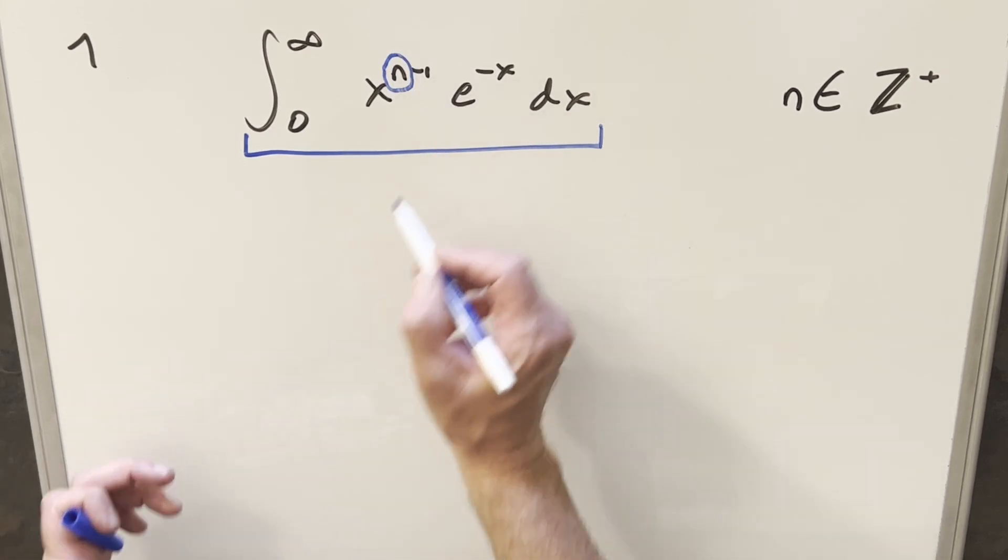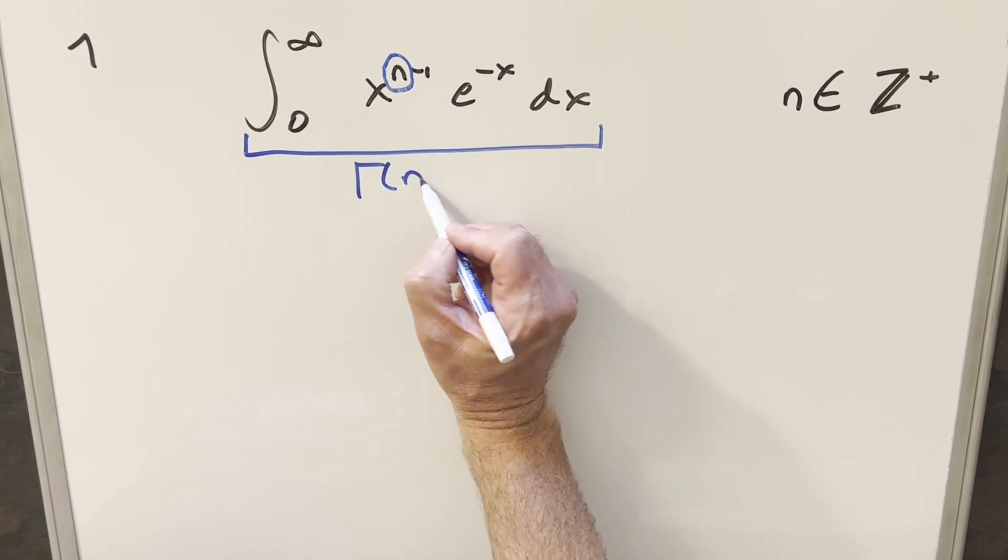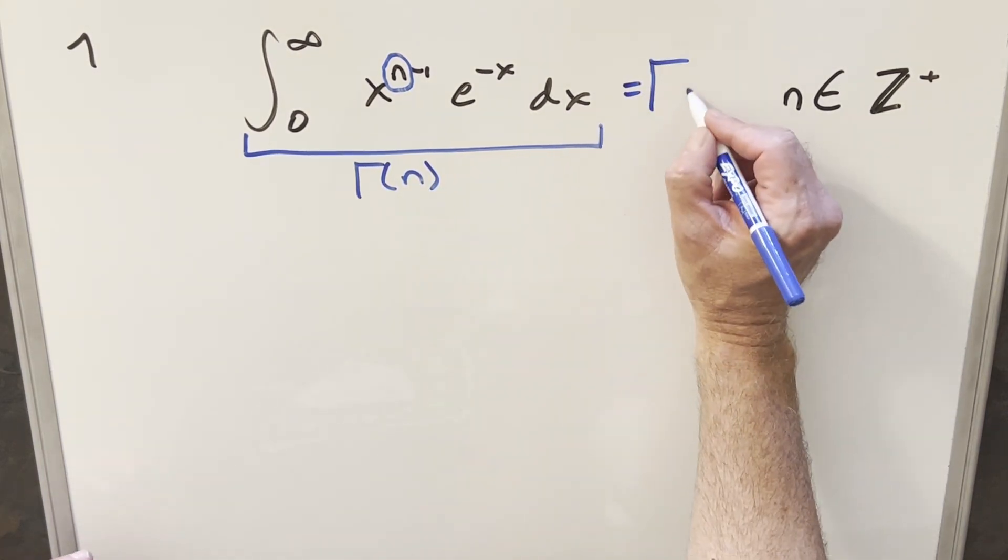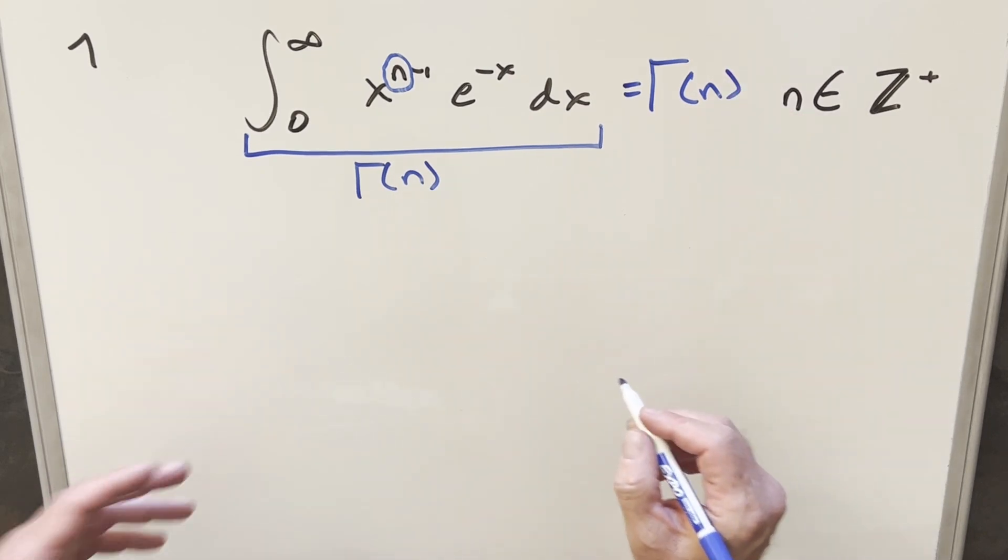This right here is the input, so like this whole thing is gamma of n. So normally I would just go right to the solution, write gamma of n, and we'd be done in like three seconds, but that's a pretty terrible video.